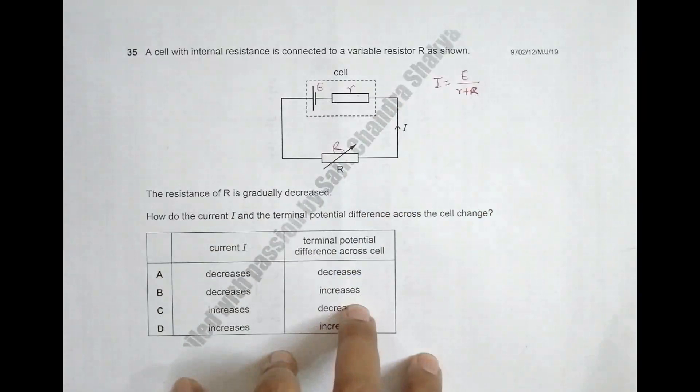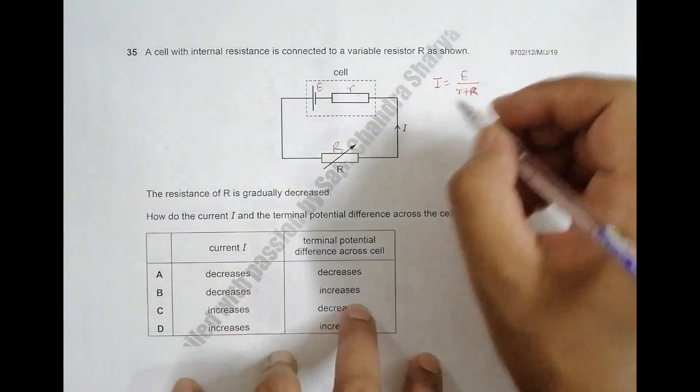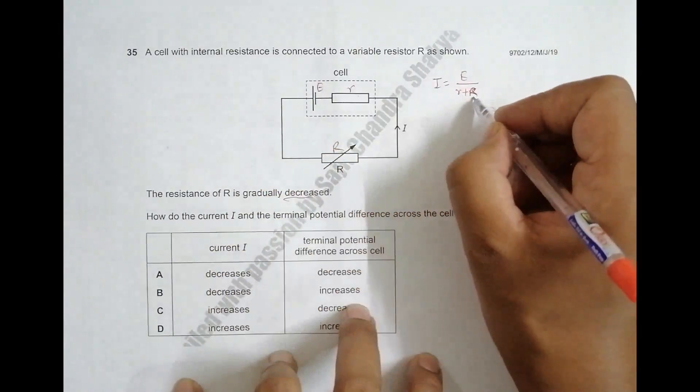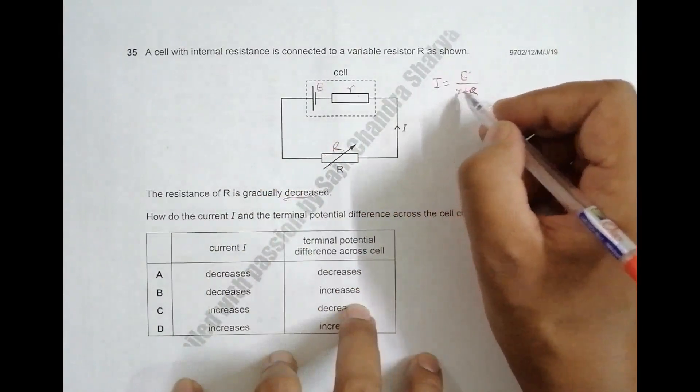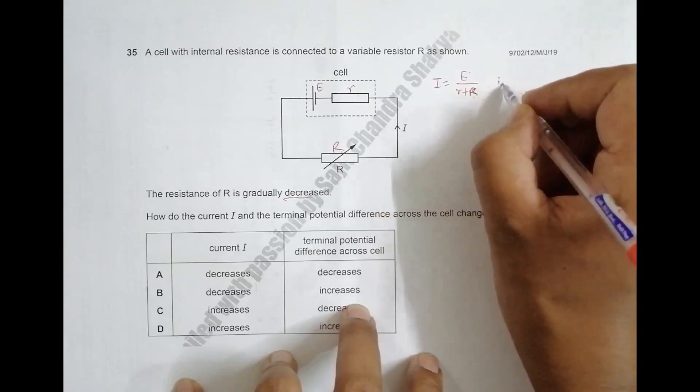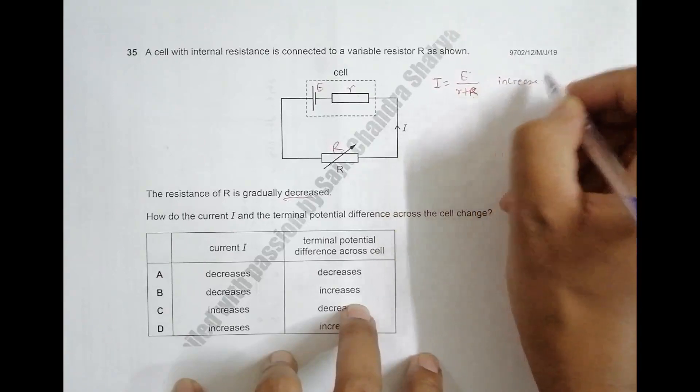Now since R is decreasing, and E and r are constant, we must have I should increase. So since R decreases, I should increase. That means these two choices disqualify, and only C and D qualify.